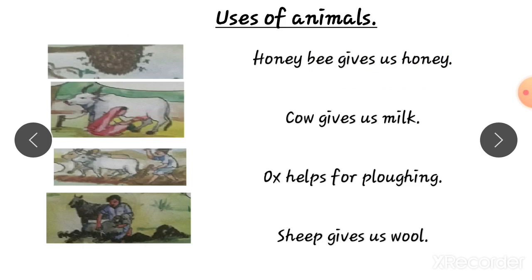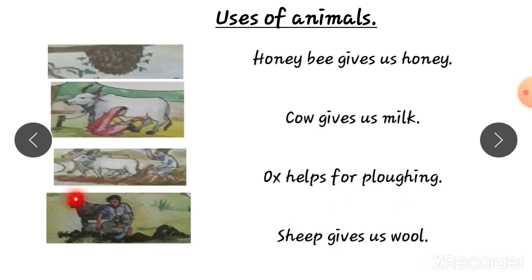Next, this is a cow — a cow gives us milk. Next, ox — in the agricultural field, a farmer uses an ox for plowing. So ox helps for plowing. Next, sheep gives us wool. In the textbook, they have given some blanks — use a pencil and complete this activity, writing these uses.